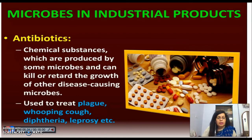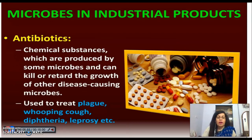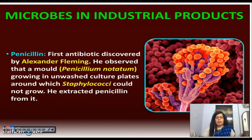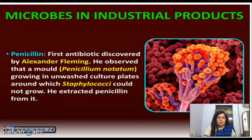Next we move on to antibiotics. In the industry, antibiotics — the word 'anti' means against, and 'bio' means living — are chemical substances produced by some microbes that can kill or retard the growth of other disease-causing microbes. They are used to treat plague, whooping cough, diphtheria, and leprosy, among many diseases. The first antibiotic discovered was penicillin, discovered by Alexander Fleming. He observed that a mold, Penicillium notatum, growing in unwashed culture plates, was an area around which Staphylococci could not grow, and he extracted penicillin from it.